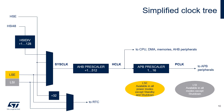The RTC clock is generated by the low-speed external 32.768 kHz oscillator (LSE), the low-speed internal 38 kHz RC oscillator (LSI), or the HSE divided by 32. The LSE can remain enabled in all low-power modes except shutdown. The LSI can remain enabled in all modes except shutdown and standby. Each oscillator can be switched on or off independently when it's not used to optimize power consumption.